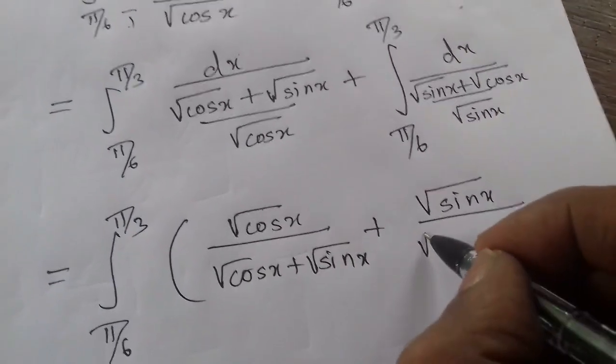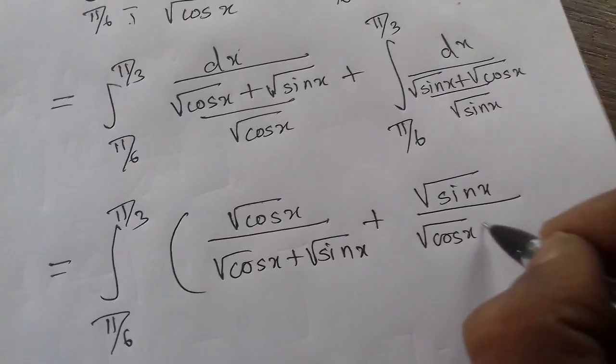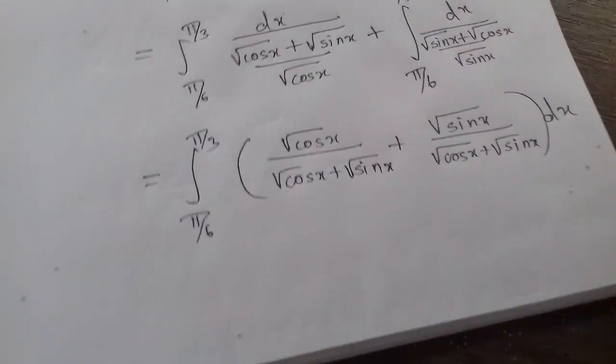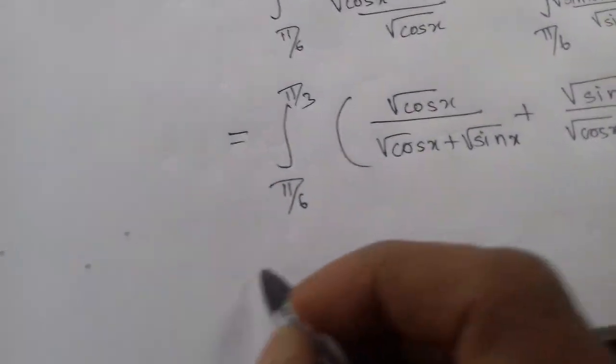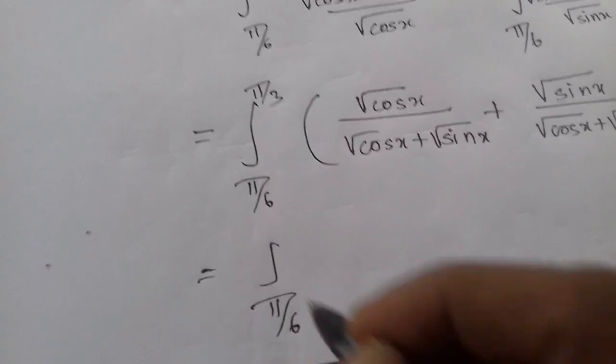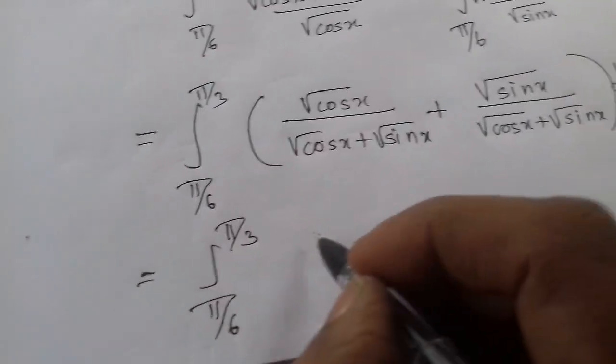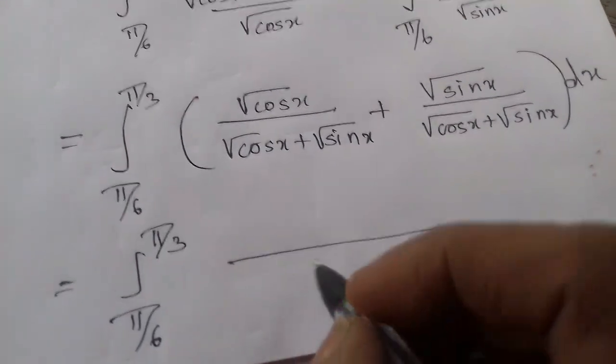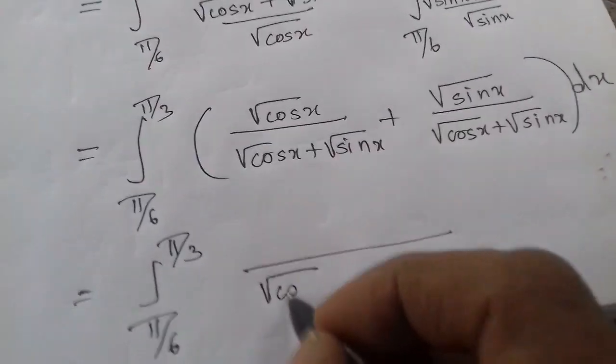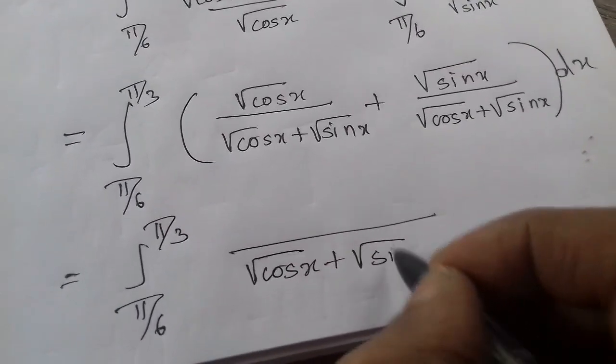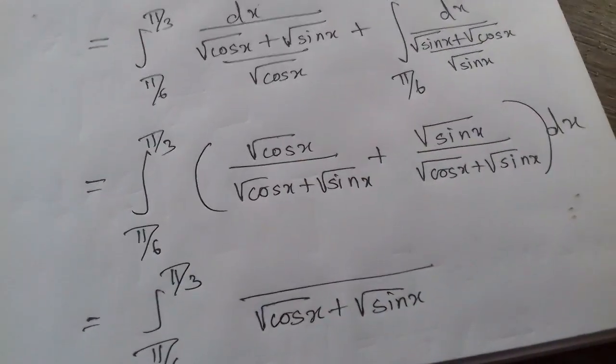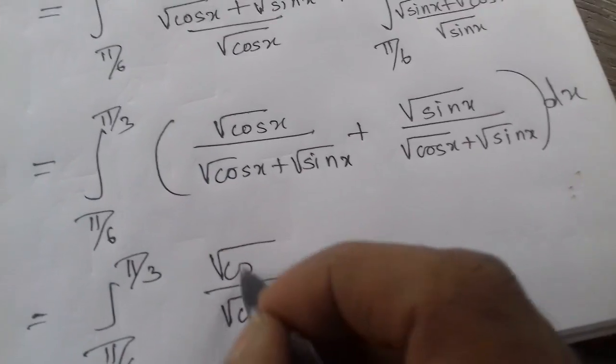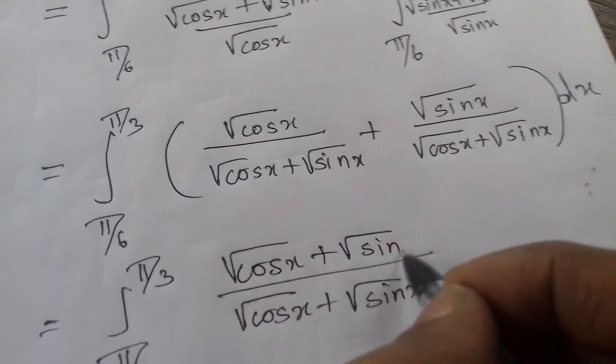Common, root cos x plus root sine x into dx. The LCM - integral π/6 to π/3. At the bottom, root cos x plus root sine x, and denominator - plus or minus. Root cos x plus root sine x into dx. Same function - cancel. What I integral of dx.